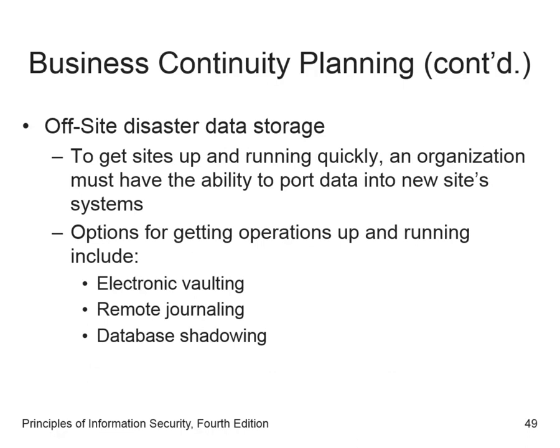To get off-site disaster data storage types of sites up and running quickly, the organization must have the ability to port data into the new site's system. There are a number of options for getting operations up and running quickly, and some of these options can be used for purposes other than restoration of continuity. This includes electronic vaulting — the bulk batch transfer of data to an off-site facility — remote journaling, the transfer of live transactions to an off-site facility where only transactions are transferred, not archived data, and the transfer is real-time. Database shadowing not only processes duplicate real-time data storage but also duplicates the data set or databases at the remote site to multiple servers.